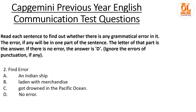Find the error. 'An Indian ship laden with merchandise got drowned in the Pacific Ocean.' 'An Indian ship' is correct. 'Laden with merchandise' is also correct. 'Got drowned in the Pacific Ocean' — here the word 'got' is wrong. It should be 'was drowned,' because they are talking about past tense. So it will not be 'got drowned' but 'was drowned in the Pacific Ocean.' Answer is option C.